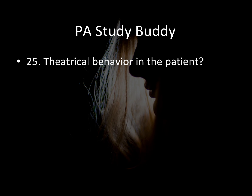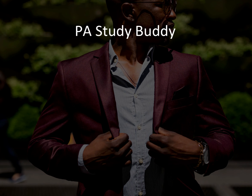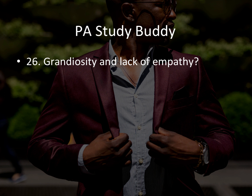Question twenty-five: theatrical behavior in a patient should make you think of what? Again — histrionic. They're theatrical, trying to get attention, dressing provocatively, saying provocative things, wanting to be the center of attention. Question twenty-six: grandiosity and lack of empathy should make you think of what? This should make you think of narcissistic disorder — they think they're the best, have little empathy, just want to talk about themselves and how much better they are than everybody else.